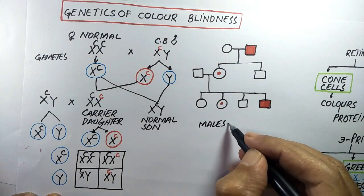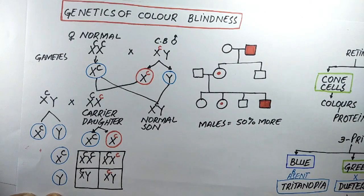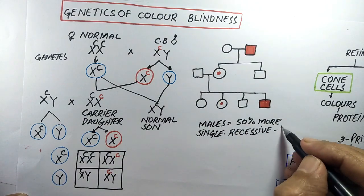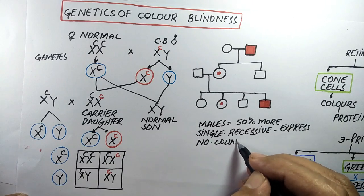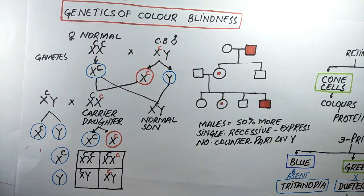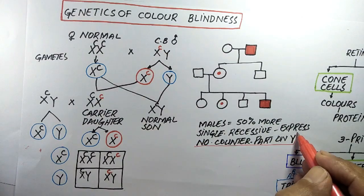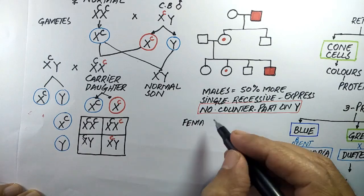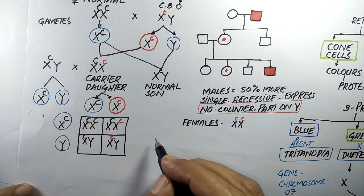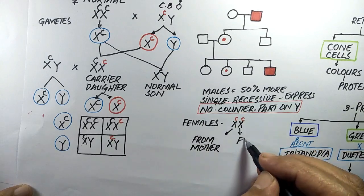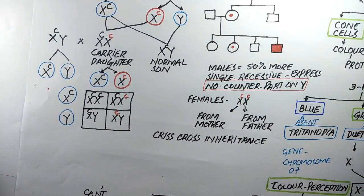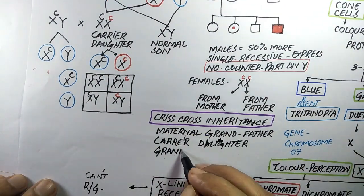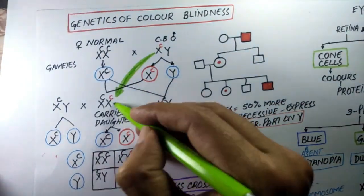In males, colorblindness is more common than in females because a single mutated gene on the X chromosome expresses in males, as there is no counterpart on the Y chromosome. For a female to become colorblind, she must receive a copy of the mutated gene from both her mother and her father. This inheritance pattern is called crisscross inheritance, because the genes are transferred from the maternal grandfather to the grandson through a carrier daughter.